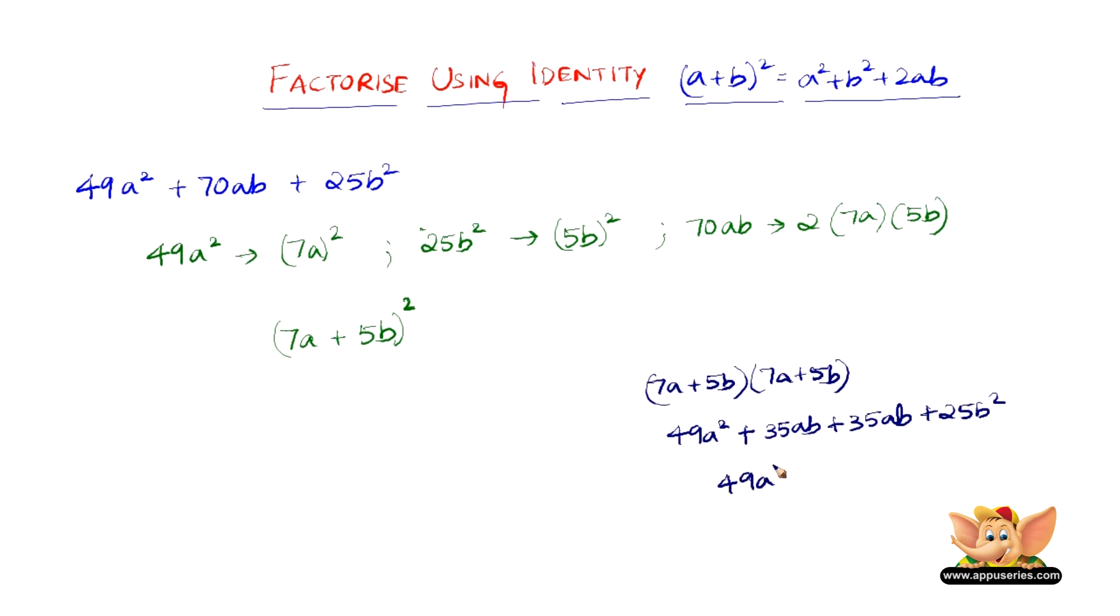So we have 49a square plus 35 plus 35 is 70ab, and ab is of course with 35 and 35, plus 25b square. So here we get the original algebraic expression.